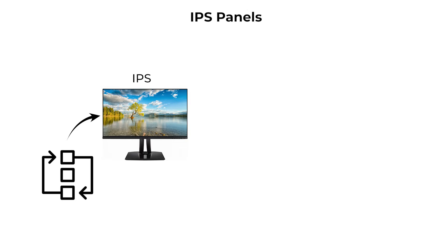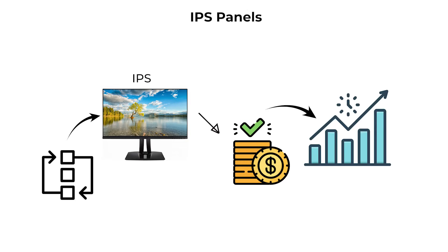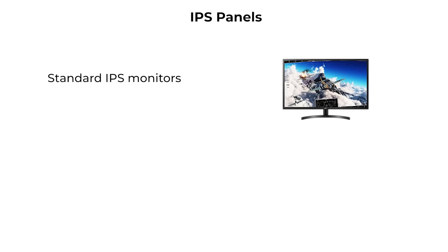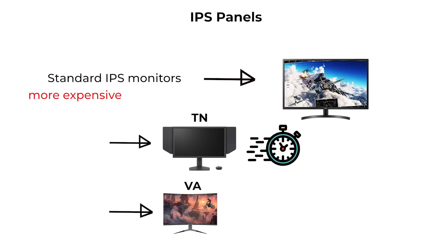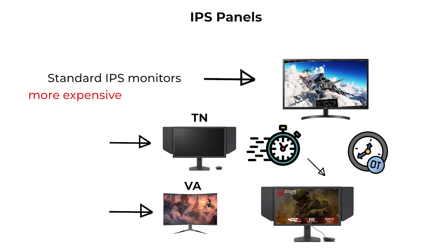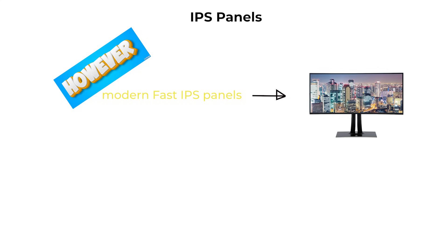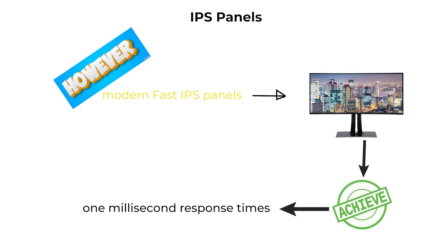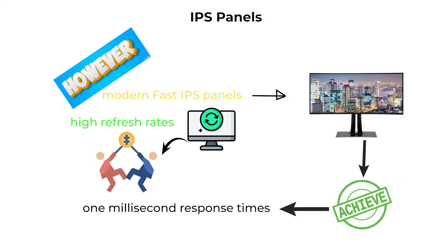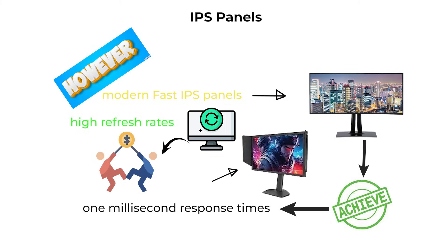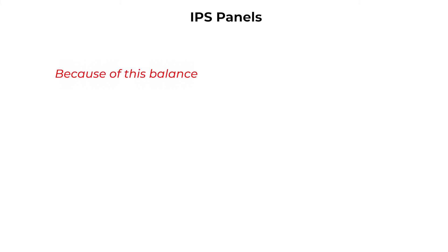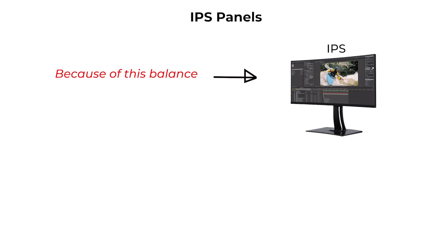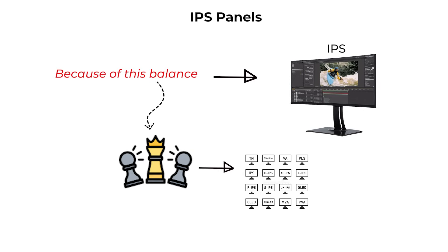The trade-offs of IPS are cost and, traditionally, speed. Standard IPS monitors are more expensive than TN or VA, and their response times are slower than TN. However, modern Fast IPS panels now achieve one-millisecond response times and high refresh rates, making them competitive with TN for gaming while still delivering superior colors and viewing angles. Because of this balance, IPS has become the dominant panel type in the monitor market today.